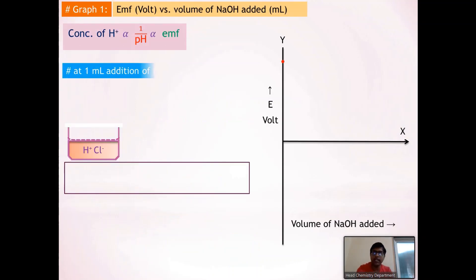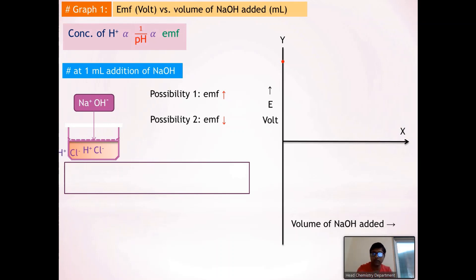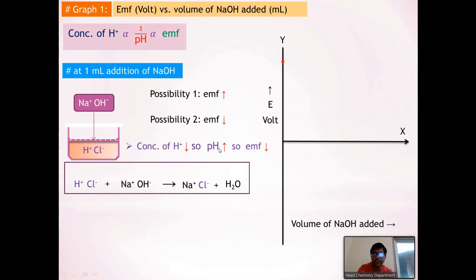When we add 1 mL of NaOH into HCl solution, a neutralization reaction takes place, producing NaCl salt and water. This neutralization decreases the concentration of H⁺ ions; as H⁺ concentration decreases, pH increases, and therefore EMF decreases. So after addition of 1 mL of NaOH into HCl, the EMF decreases. As volume of NaOH added increases, EMF continues to decrease because H⁺ concentration decreases and pH increases.